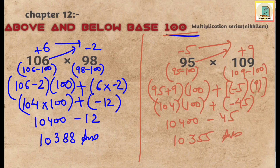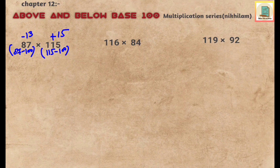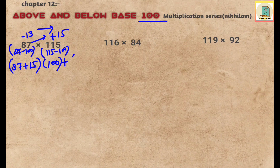Let's take more examples to understand this concept better. The next question is 87 multiplied by 115. We find the deviation: 87 minus 100 gives minus 13, and 115 minus 100 gives plus 15. So first number plus the second deviation: 87 plus 15 multiplied by the base 100, plus multiply the deviations: minus 13 multiplied by 15.